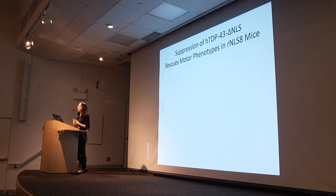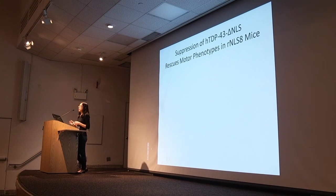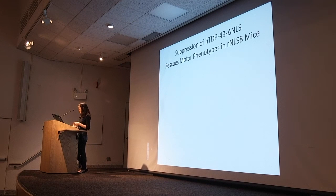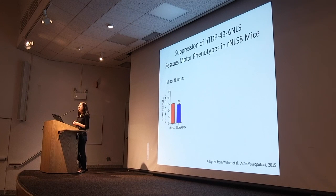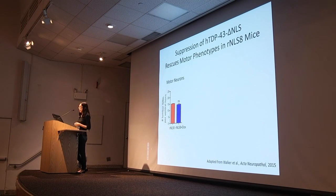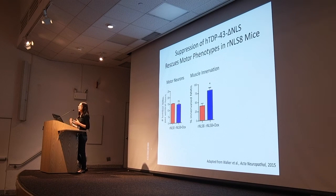Perhaps what's even more exciting about this mouse model is that we found that upon suppression of the transgene by reintroducing dox into the mice's diet, there was halted continued neurodegeneration, as well as re-innervation from the remaining axons that sprout to compensate for the previous motor neuron loss.